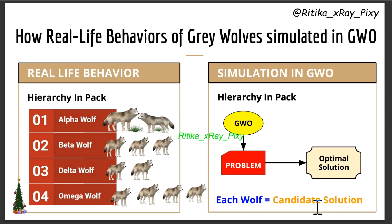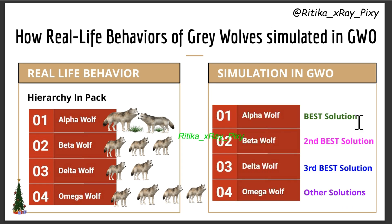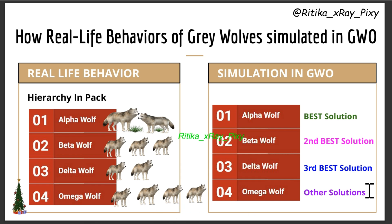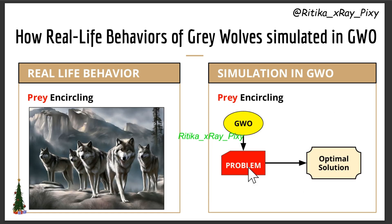Each wolf in the pack represents a candidate solution. We will rank our solutions: alpha means the best solution among all, beta means the second best solution, delta means the third best solution, and the remaining solutions are considered omega wolves. Each wolf is a search agent and a candidate solution.